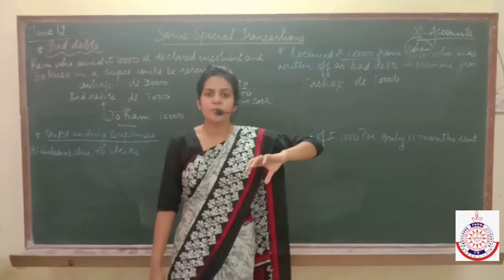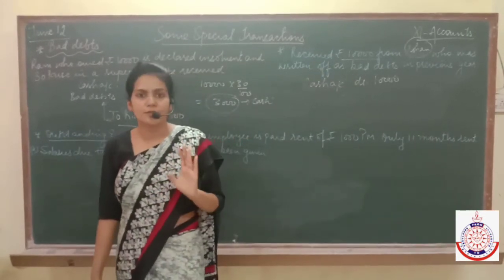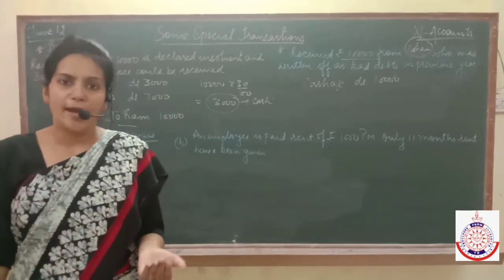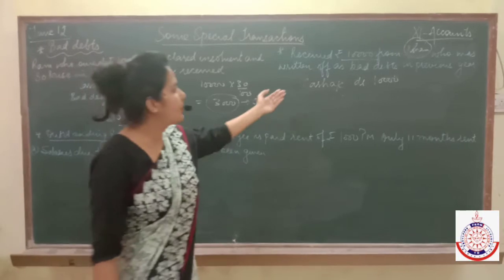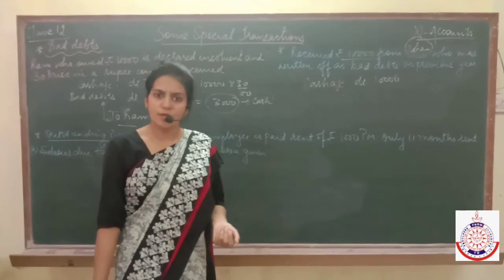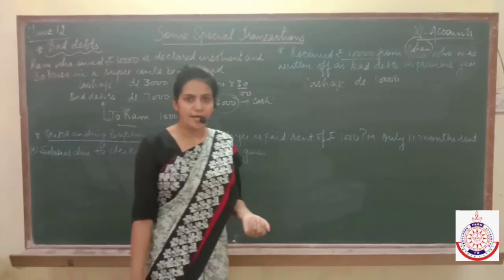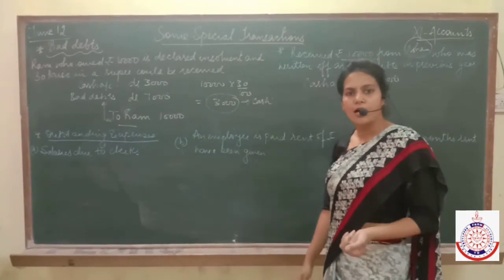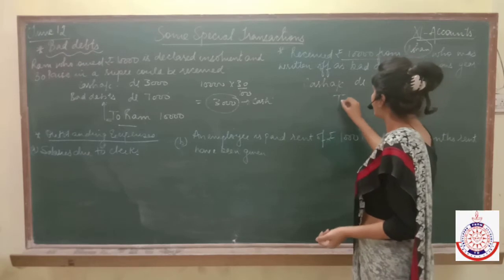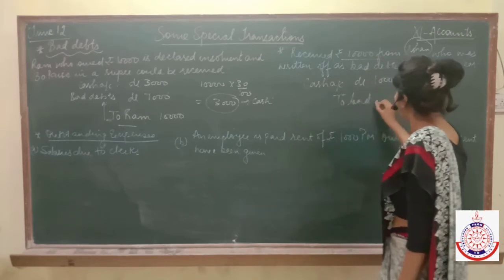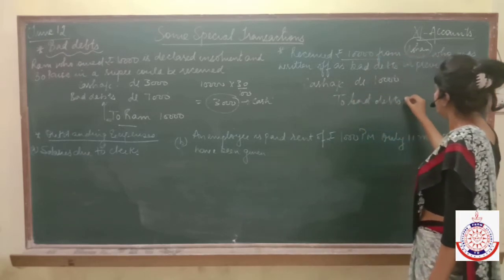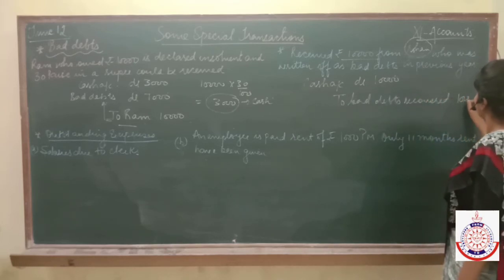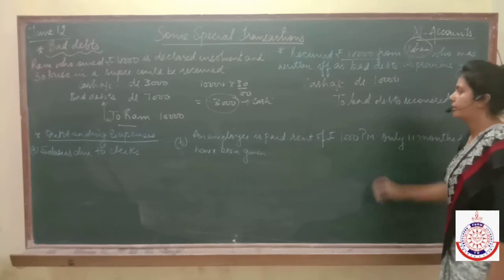If Rohan makes some payment now, we can't use the word Rohan — we have to call Rohan by the name of bad debts. But this bad debt, meaning Rohan, has given some money to us. It means he becomes bad debts recovered, which is income for us. So pass the entry: cash account debited to bad debts recovered, 10,000.